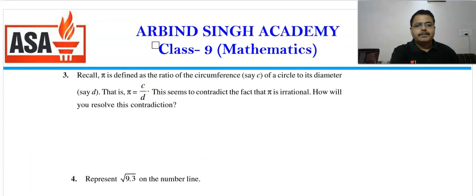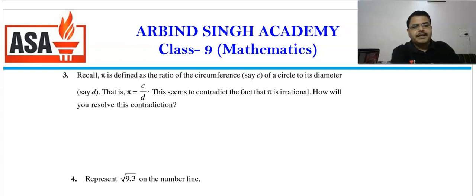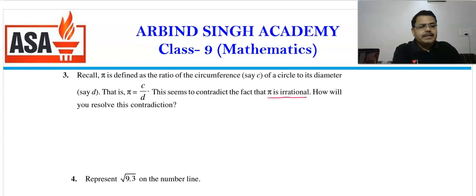Now let's do a question. Pi is defined as the ratio of circumference to the diameter of the circle, so π = C/D. The question is: it seems to imply that π is rational. How will you resolve this — is pi irrational?